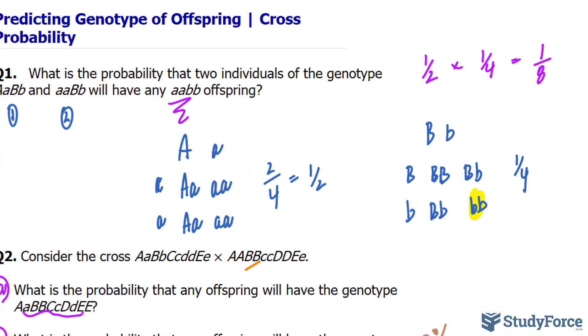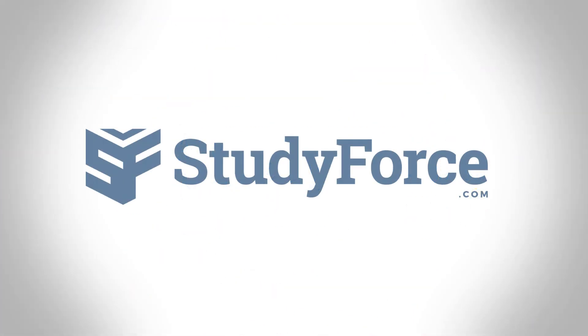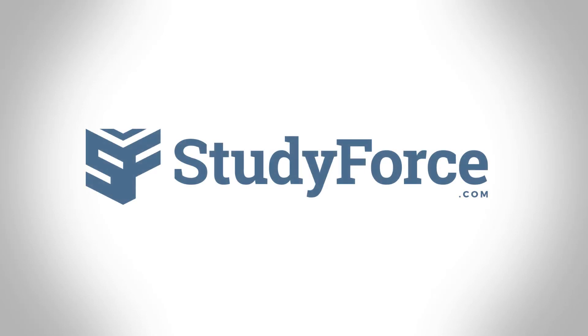And there you have it. That is how to predict the genotype of offspring using what we know about probability and crosses.